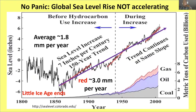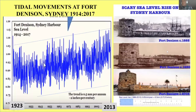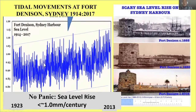Global sea level rise — there's a lot of talk about whether it's accelerating. Here's a plot of tide gauge data showing an increase from about 1850. The average over the whole period is 1.8 millimeters per year; the recent red intervals suggest about 3 millimeters per year if continued. Here's Fort Denison in Sydney with photographs from 1885 to 2015 — it looks pretty much the same. The sea level data from 1923 to 2013 shows about one millimeter per year, which doesn't seem to be cause for panic.